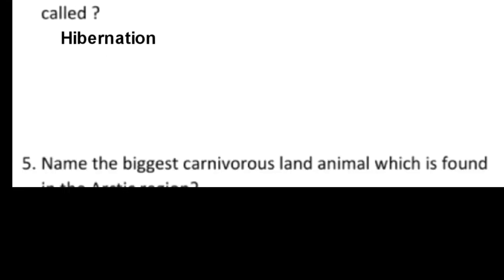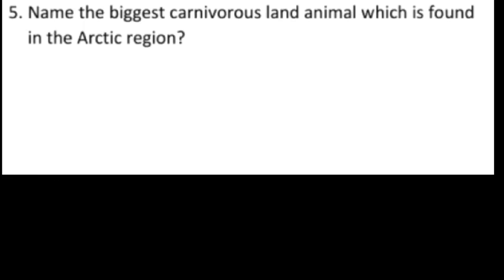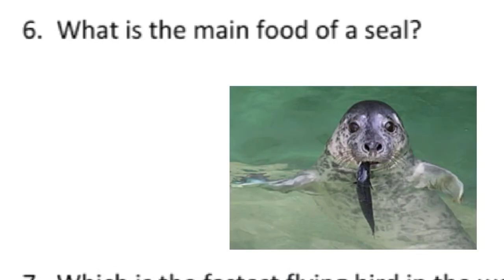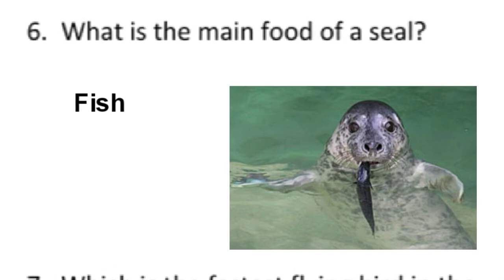Question number 5: name the biggest carnivorous land animal found in the arctic region. The answer is polar bear. Question number 6: what is the main food of a seal? It is fish. Seals use their whiskers for locating prey in predominantly turbid waters.